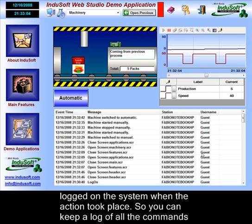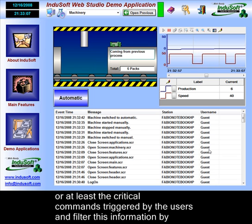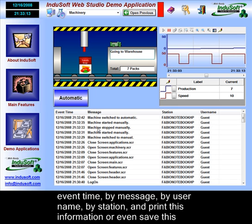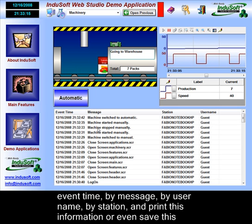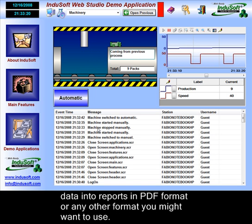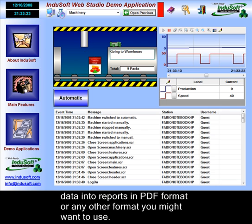You can keep a log of all the commands — or at least the critical commands — triggered by the users, and filter this information by event time, by message, by username, by station, and print this information, or even save this data into reports in PDF format or any other format you might want to use.